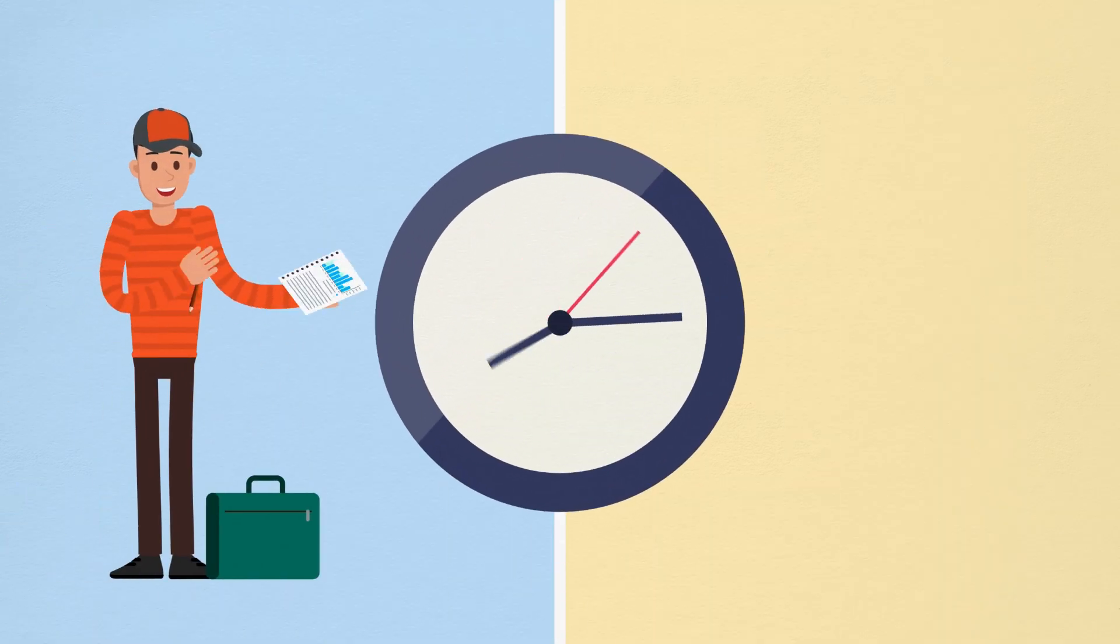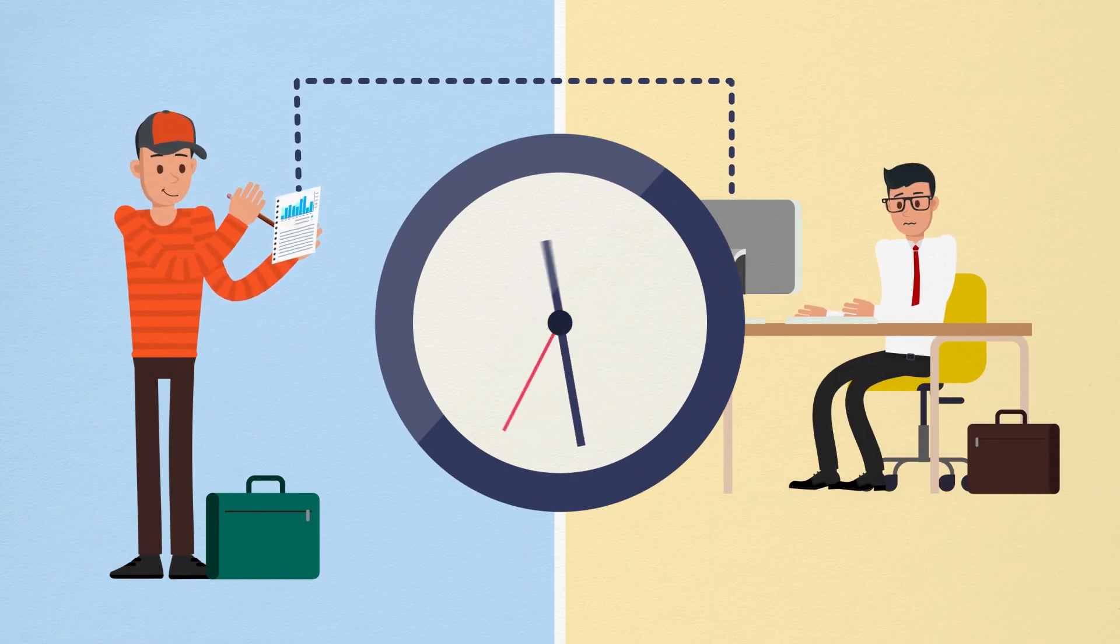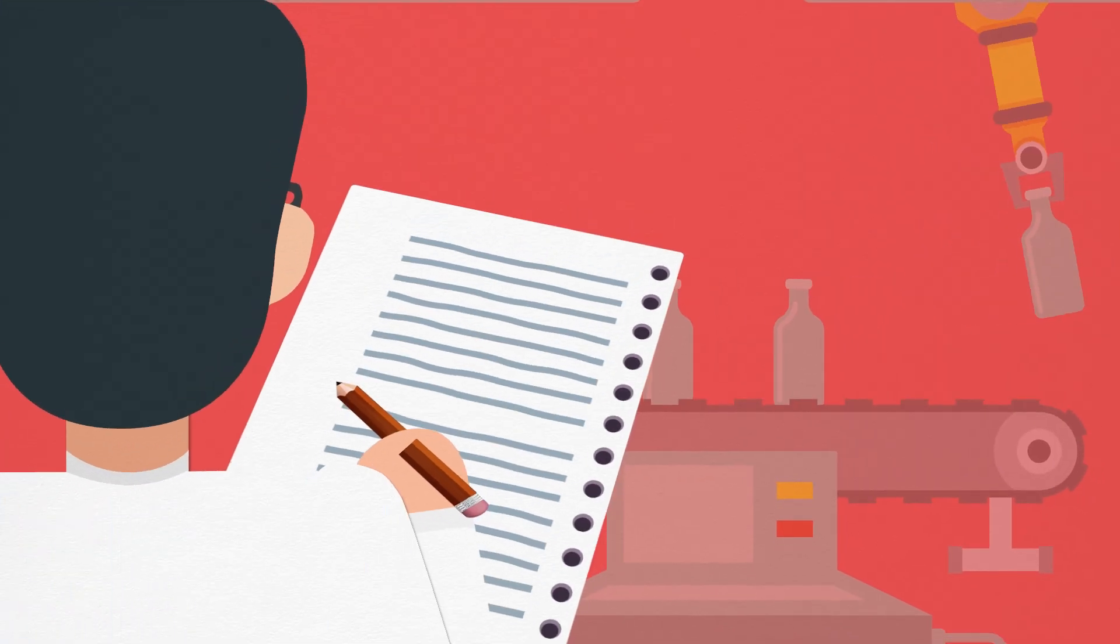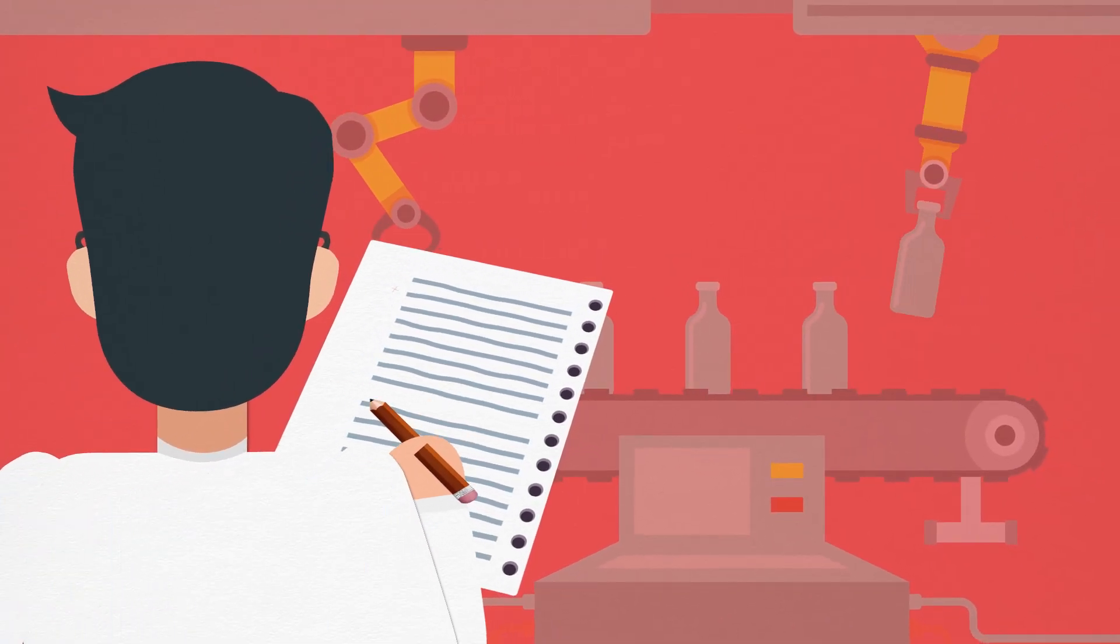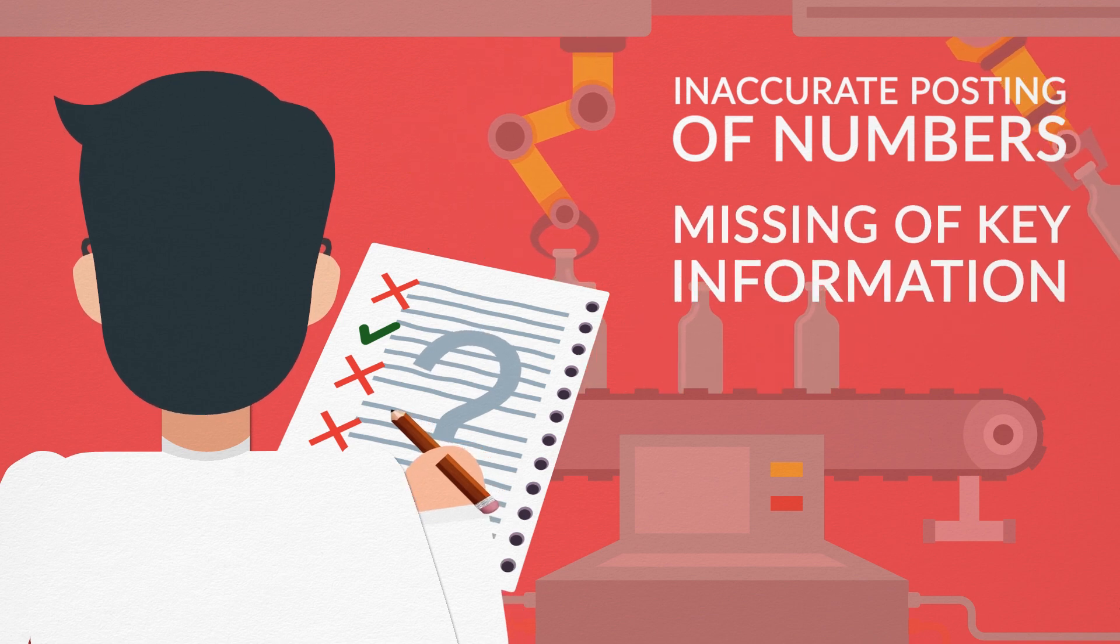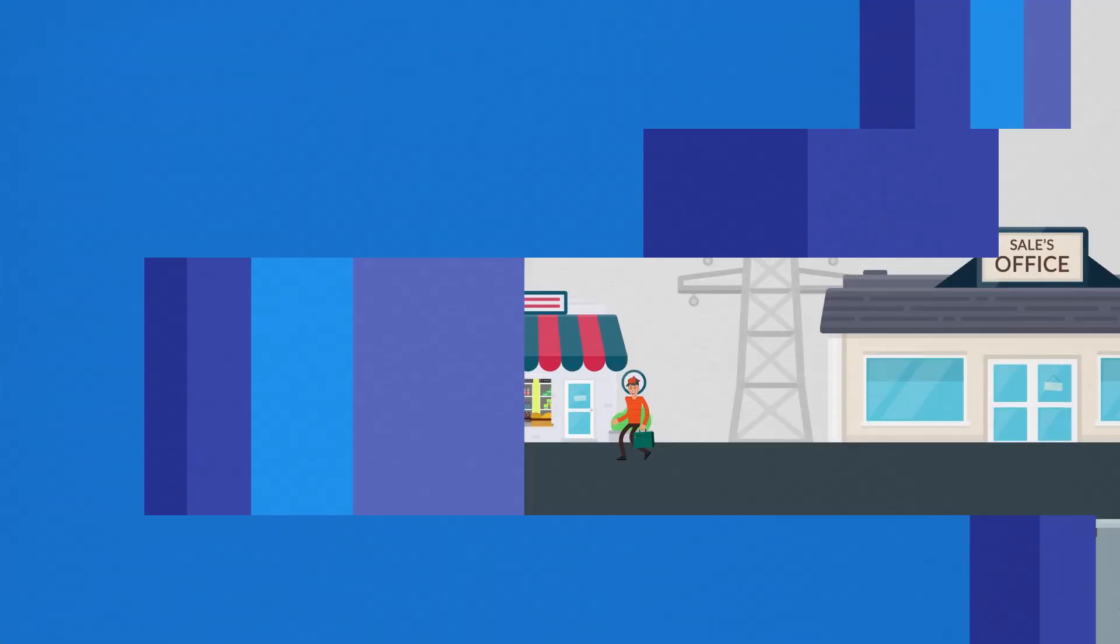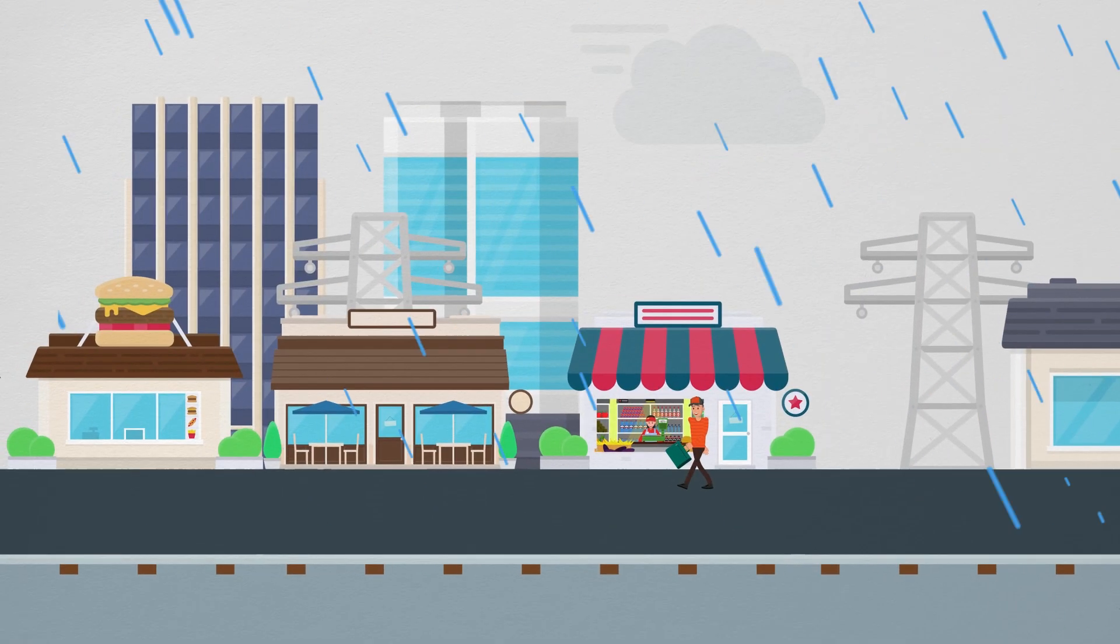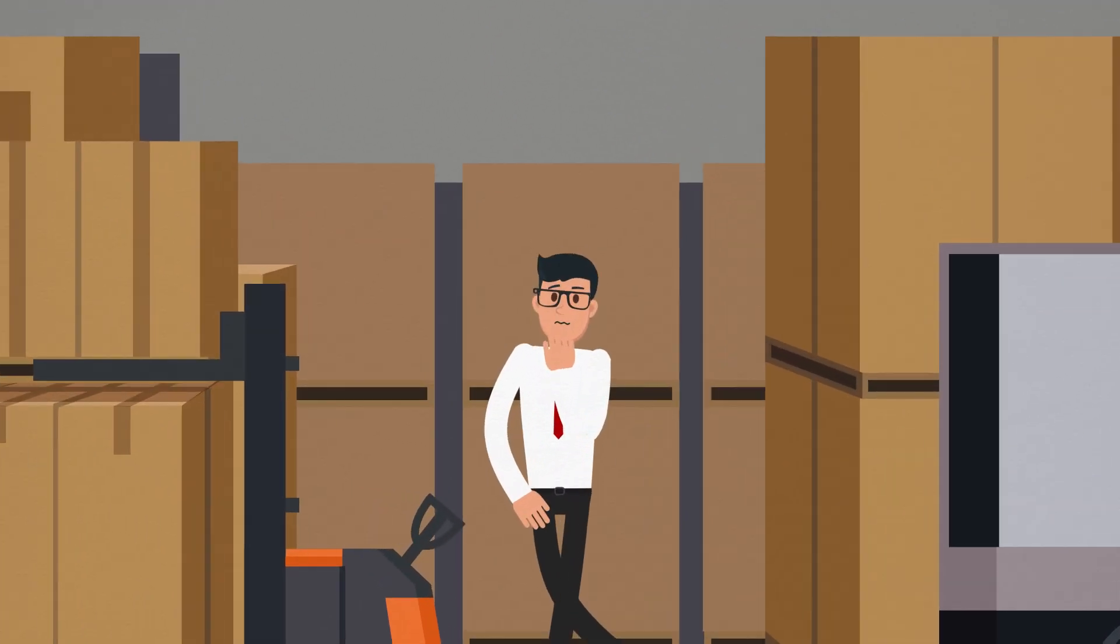But it takes them a long time to send their daily sales reports to the authority. And since all these records are made manually on paper, inaccurate posting of numbers and missing of key information is a common event. Sometimes, the sales representatives don't visit all the assigned retail shops, but don't report that to the authority.